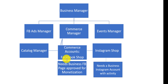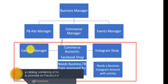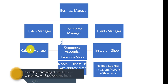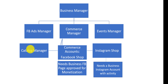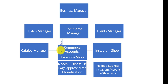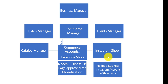Under the Commerce Manager you have a Catalog Manager — a basket where you can import products from your website. Once you have added a catalog, you can create a Facebook Shop and an Instagram Shop. The Commerce Manager lets you create a commerce account, and each Facebook Shop is associated with one. To have a successful Facebook Shop you need a Facebook business page approved for monetization, and for Instagram you need an Instagram business page approved for shopping.